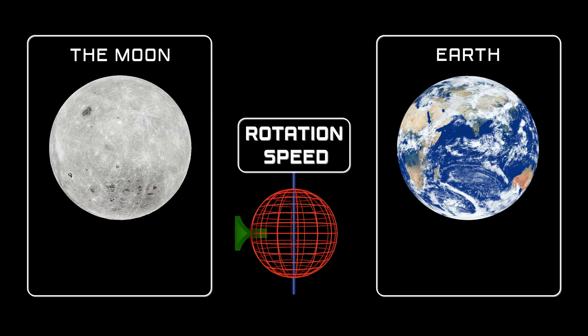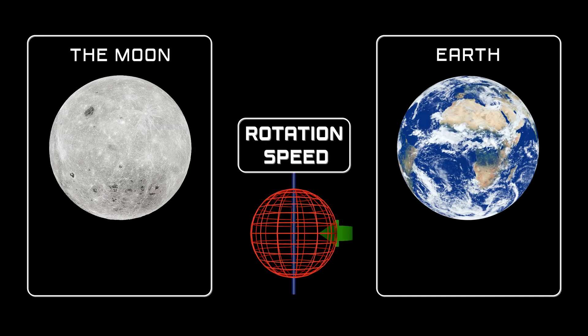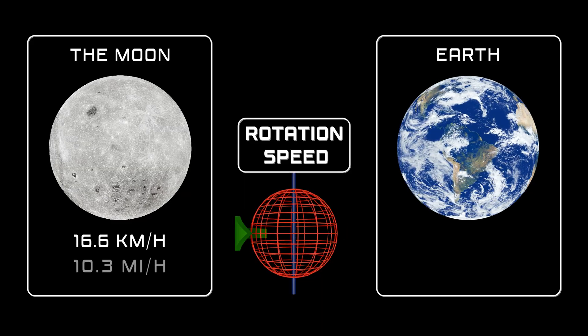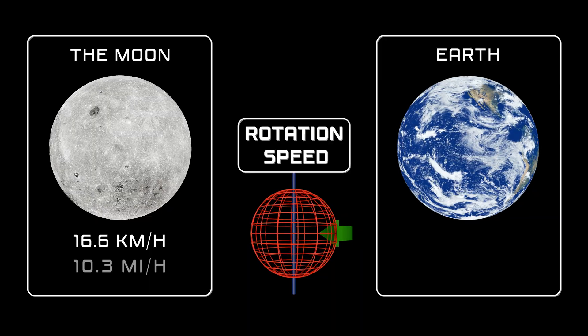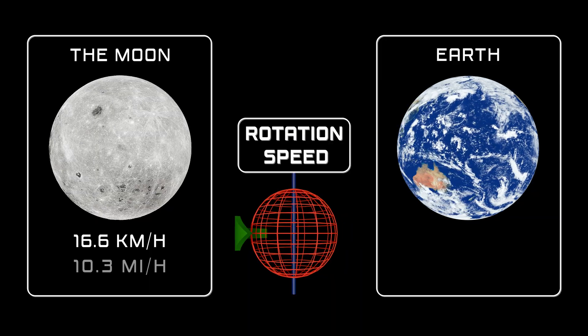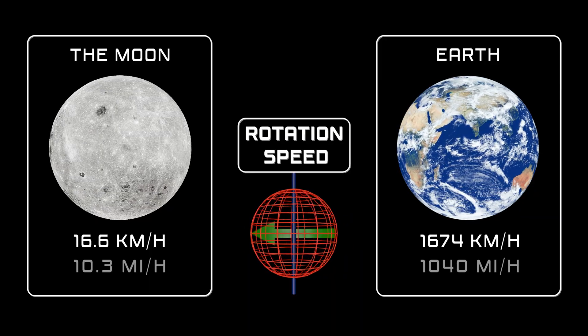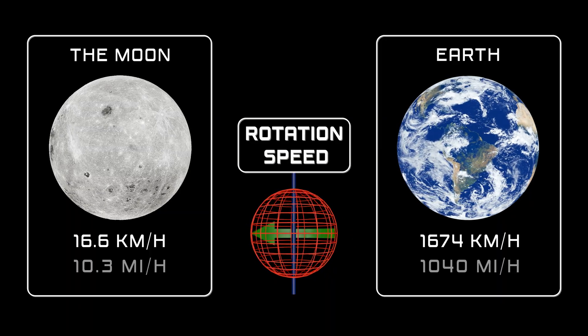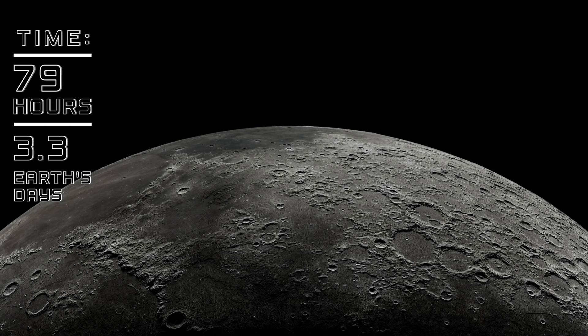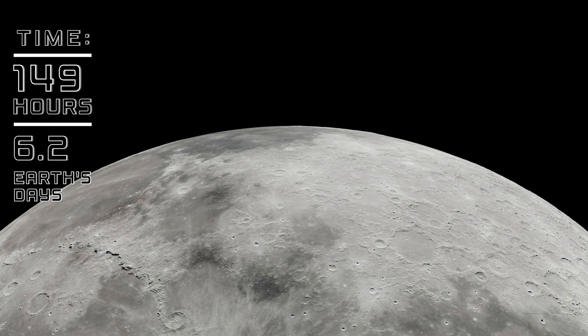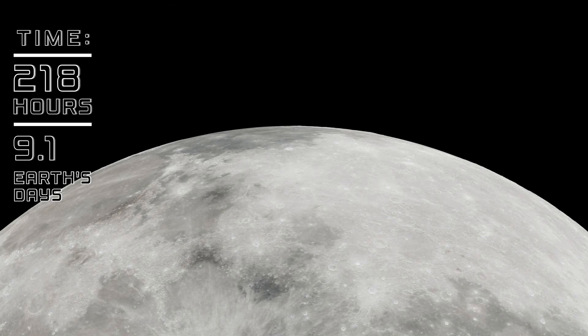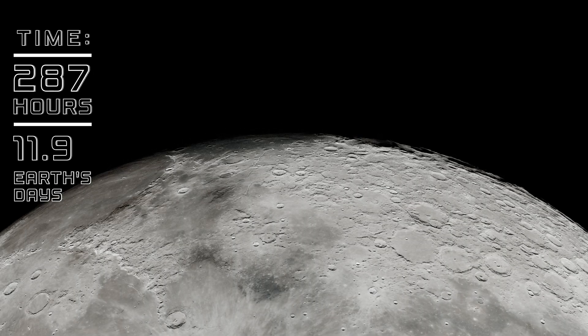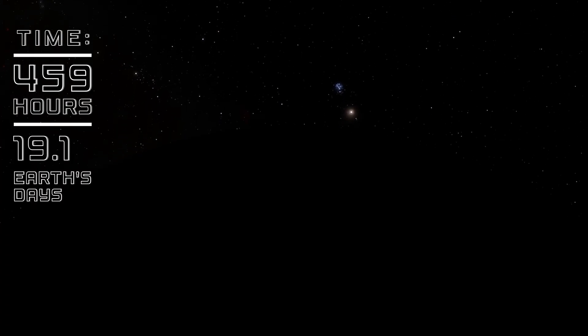Tidal locking slowed the Moon's rotation around its axis. The Moon now rotates at a speed of 16.6 km per hour, compared to Earth, which rotates much faster at a speed of 1,674 km per hour. Tidal locking also extended the length of the lunar day significantly. A day on the Moon, from one sunrise to the next, lasts 708 hours, or 29.5 Earth days.